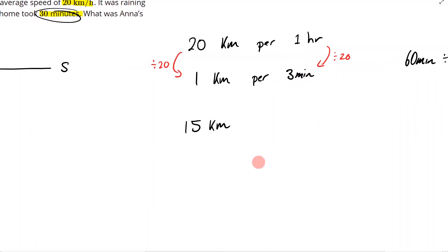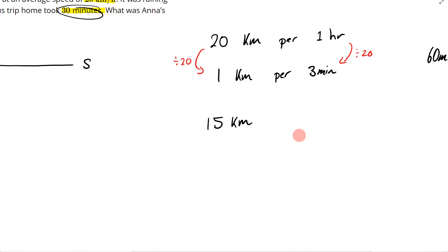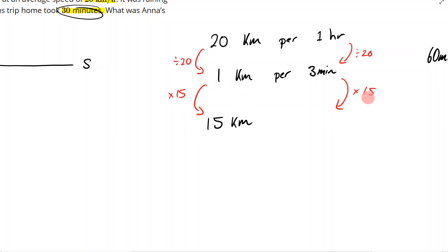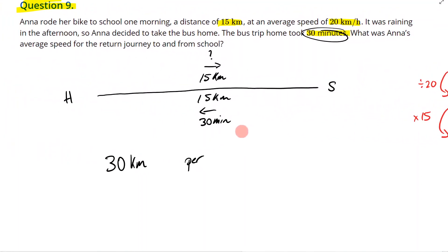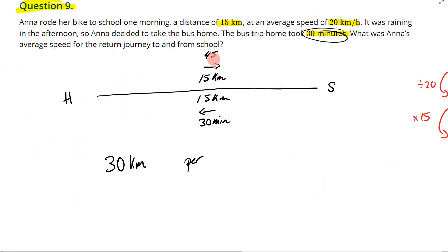So it takes her 3 minutes to move 1 kilometer. The next thing I need to do is take that 1 kilometer and turn it into 15, and to do that I times it by 15. You can see the power of turning something into 1 — it's really easy to go to whatever you need. So 3 times 15 is — actually 45. So at a speed of 20 kilometers per hour, it took Anna 45 minutes to move 15 kilometers.